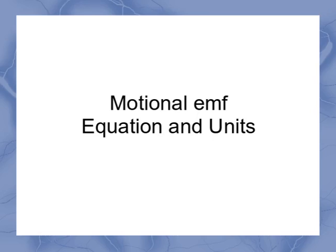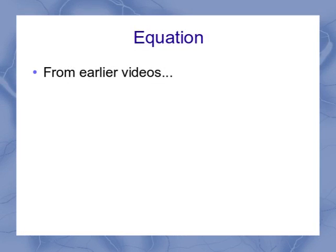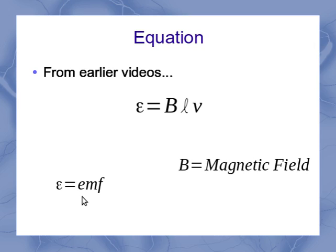So now we can examine the equation and the units for that equation for motional EMF. What we see is that from earlier videos, we had the equation that the EMF equals BℓV, where that epsilon symbol is our EMF. The B is our magnetic field, the ℓ is our length, and the V is our velocity.